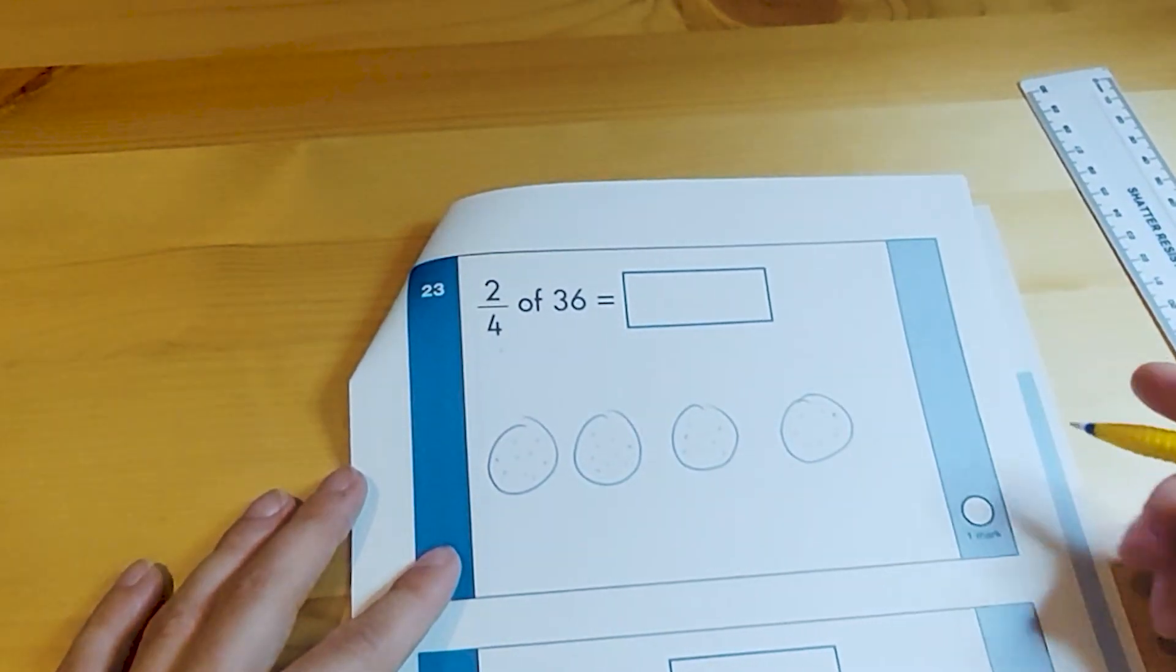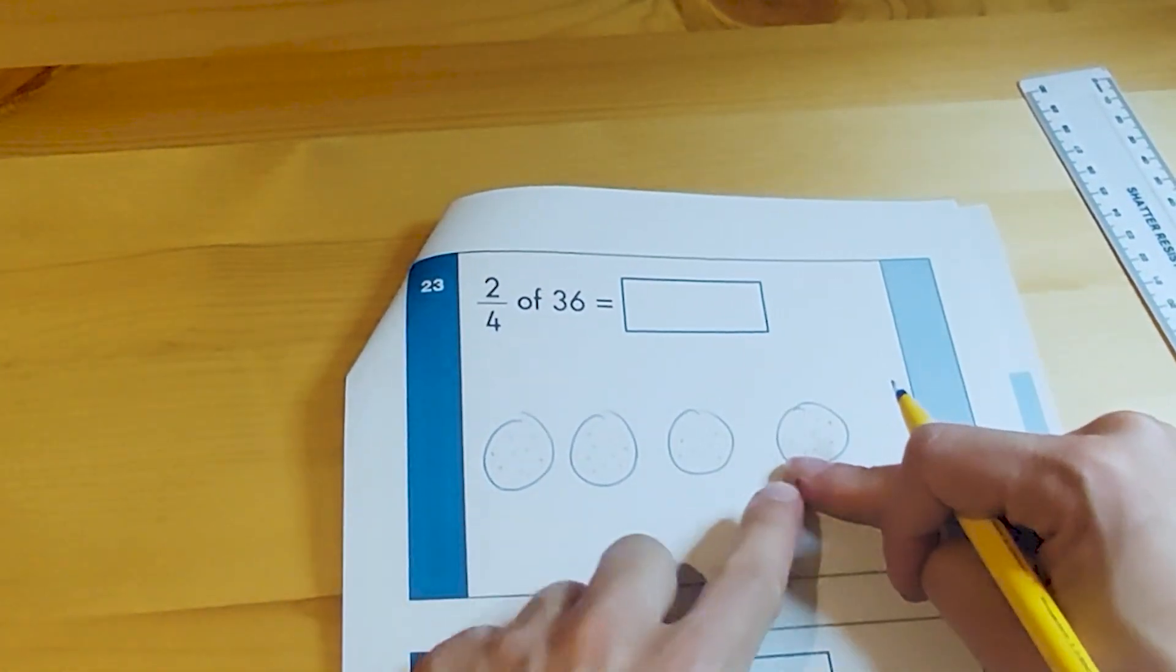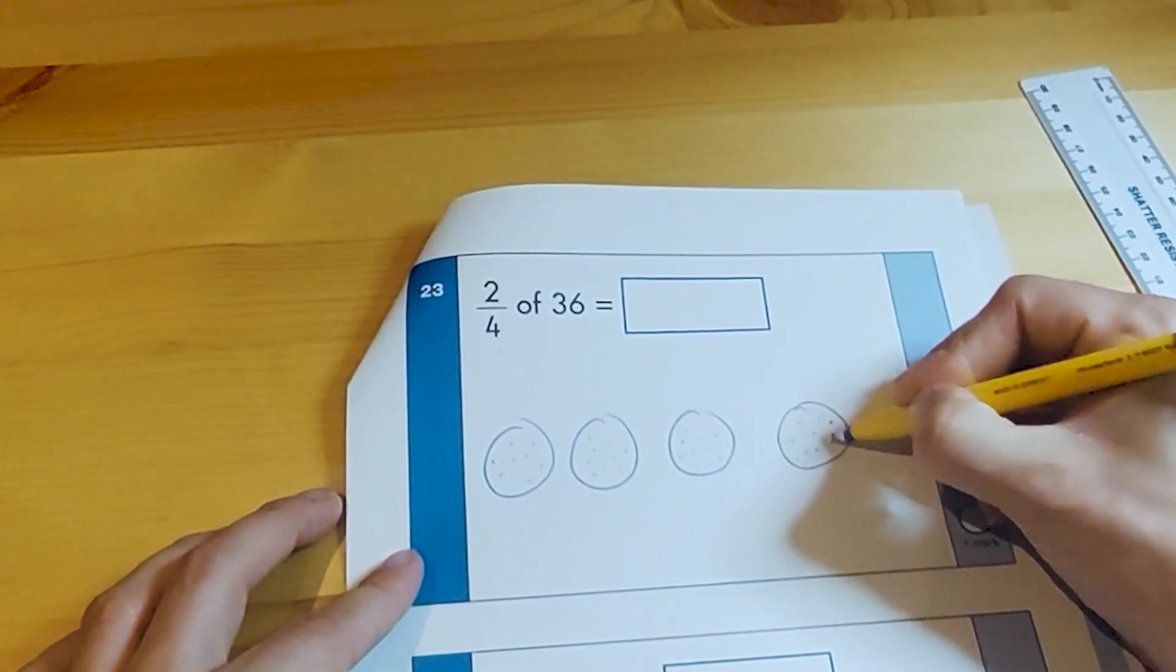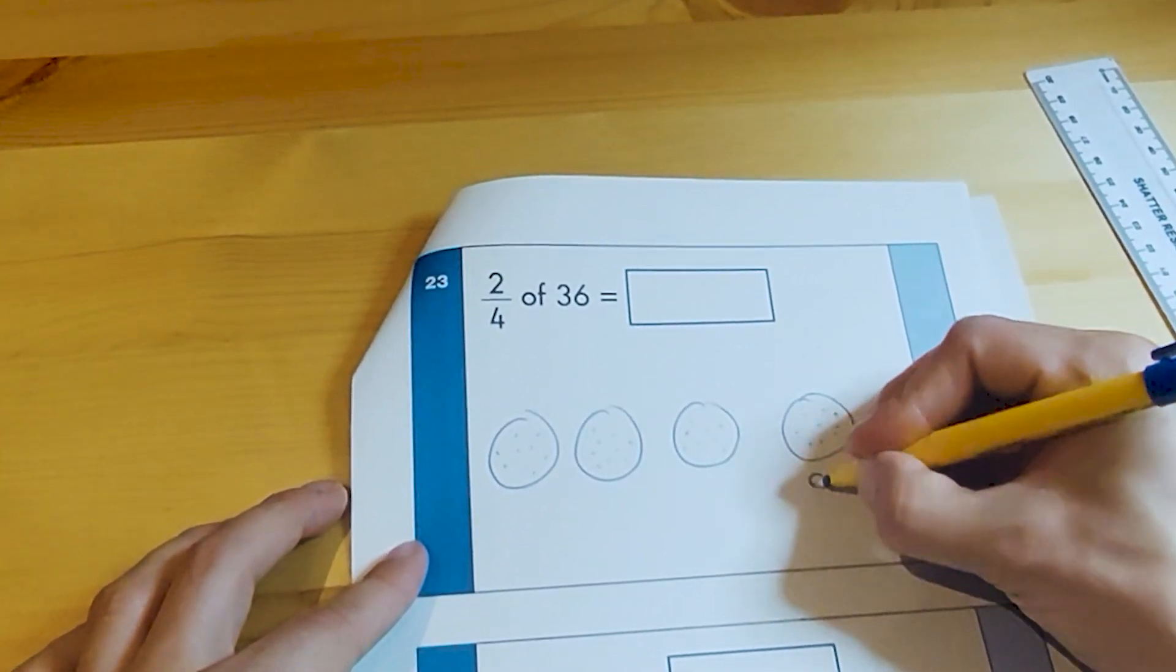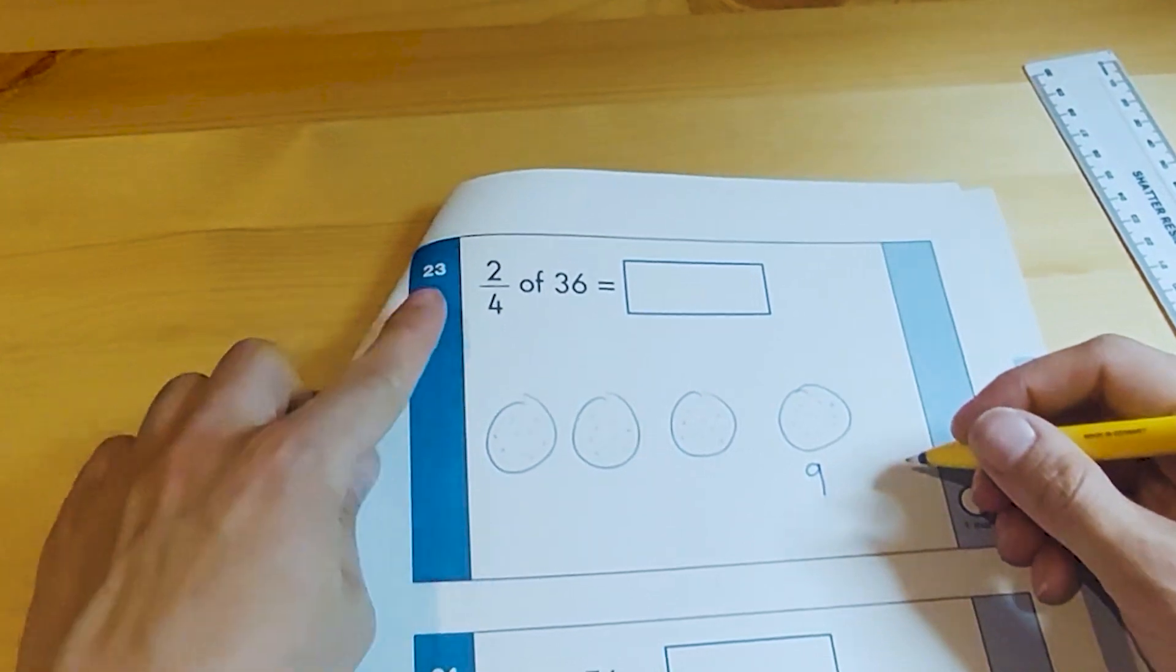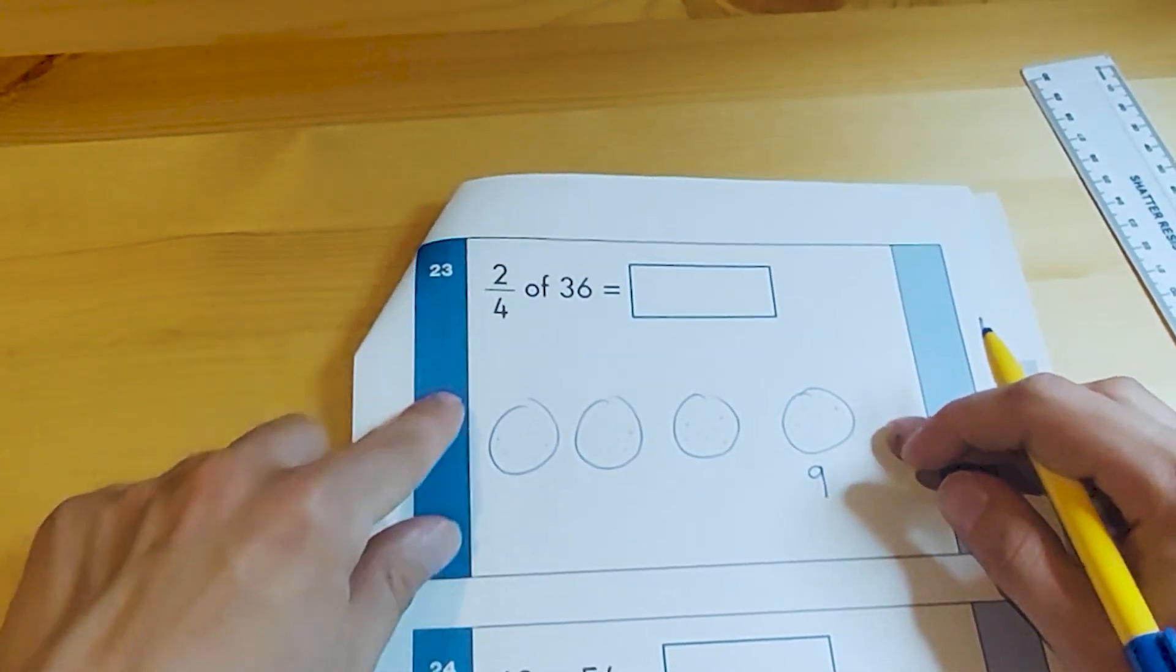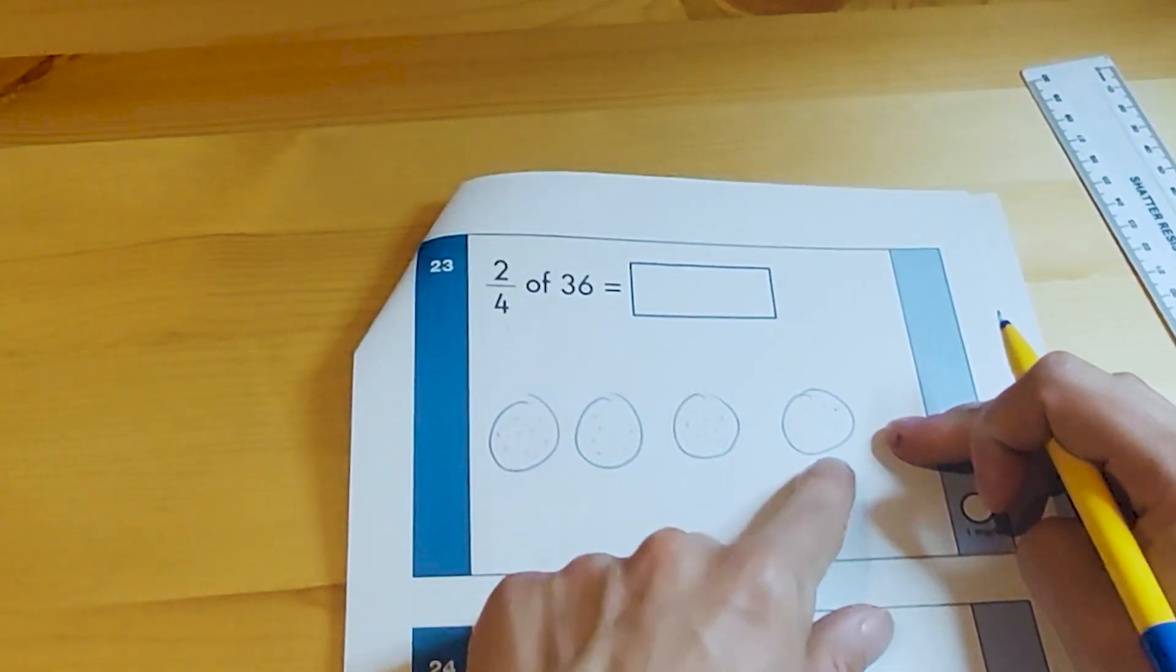35, 36. Okay, and if we look carefully here, how many do you have in each group? One, two, three, four, five, six, seven, eight, nine. Nine in one group, but this time we're not looking for one group.